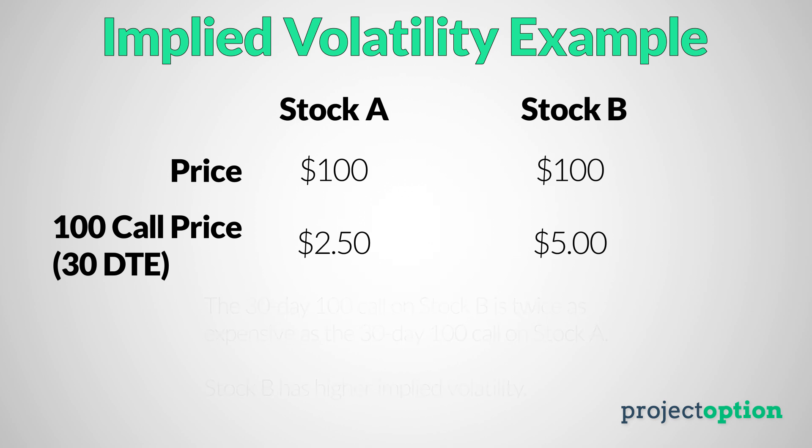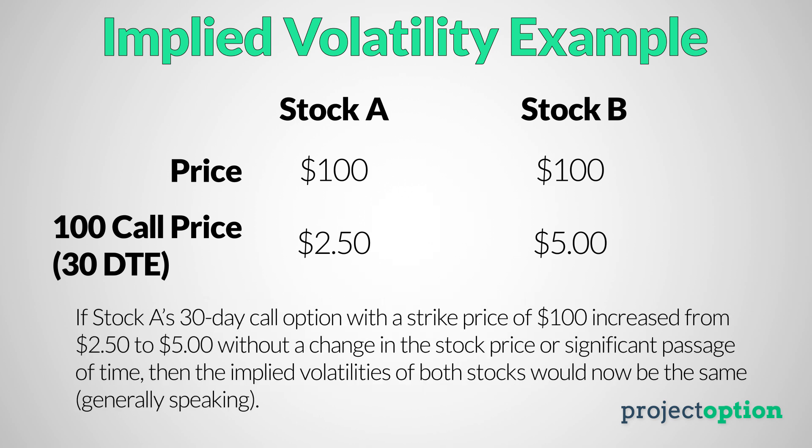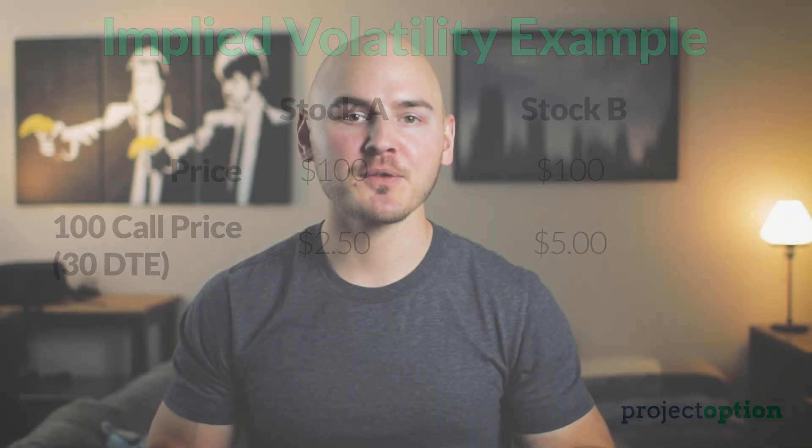So theoretically speaking, if the stock with cheaper options were to experience a shift in supply and demand and those option prices actually increased to match the more expensive stock's options, then the implied volatility of that stock with initially cheaper options would see an increase in implied volatility. In other words, if you look at a stock's options and in one single trading day those options get more expensive and take on more extrinsic value due to more demand for purchasing those options, then you will see an increase in implied volatility in that stock, because with more expensive options relative to the time until they expire, that means traders are expecting more stock price volatility.